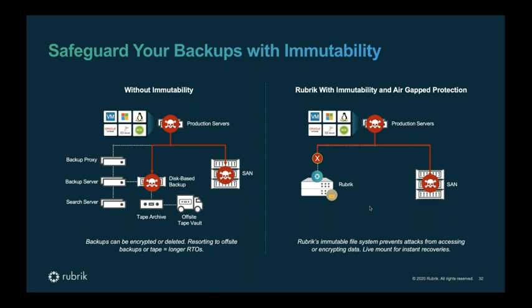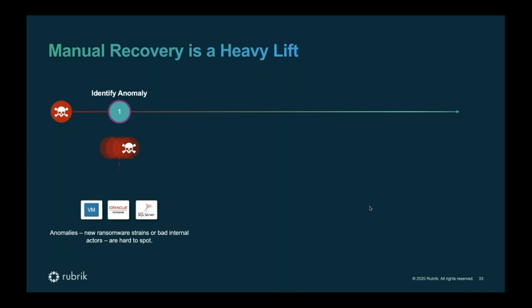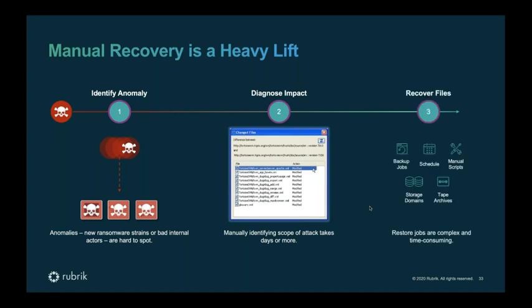Bringing those two things together gives a very resilient, protected copy of data with instant, flexible recovery. Radar accelerates what would otherwise be a manual recovery process. Without Radar, you'd have to identify the anomaly, determine whether it was internal or external, and then do a diagnostic impact analysis — bringing multiple backup points in time and scanning differentials to see exactly what was impacted or encrypted. Some customers even had to rebuild their backup architecture, pull tapes from Iron Mountain, and reinstall backup applications and infrastructure — a lifecycle that can take days to weeks.